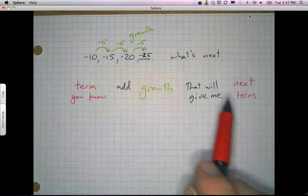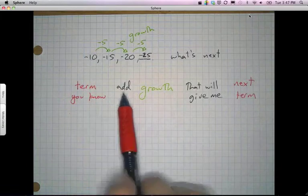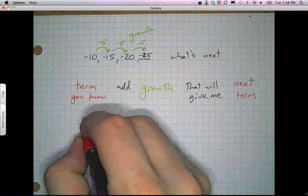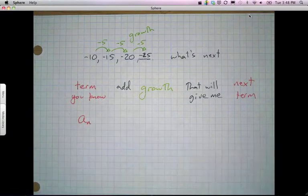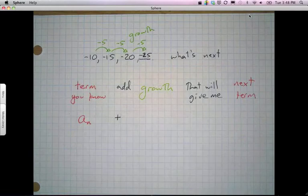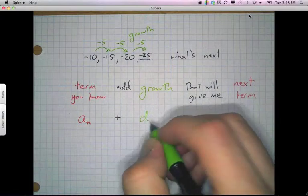This works for arithmetic terms, no matter what they are, because you're adding them together. If I wanted to write this as a recursive form, the way I would say that is this. a sub n is the term that you know, adding is going to be plusing something, and my growth, in this case, is going to be I'm going to use the variable d for my difference.